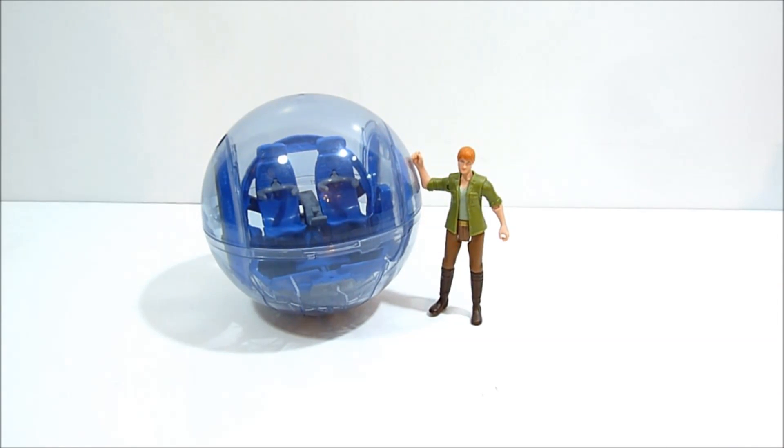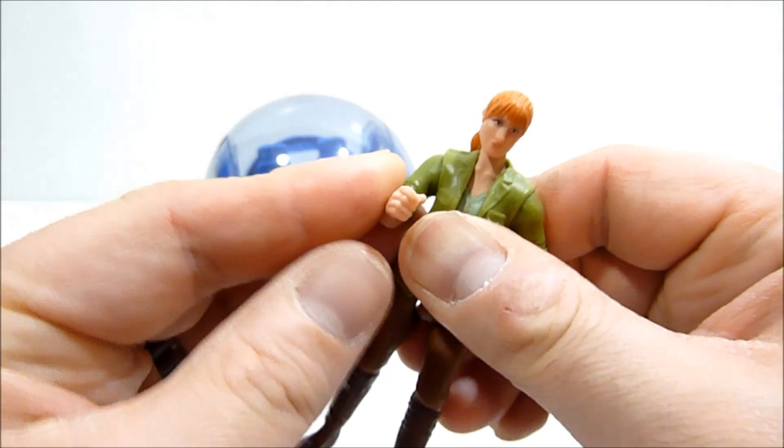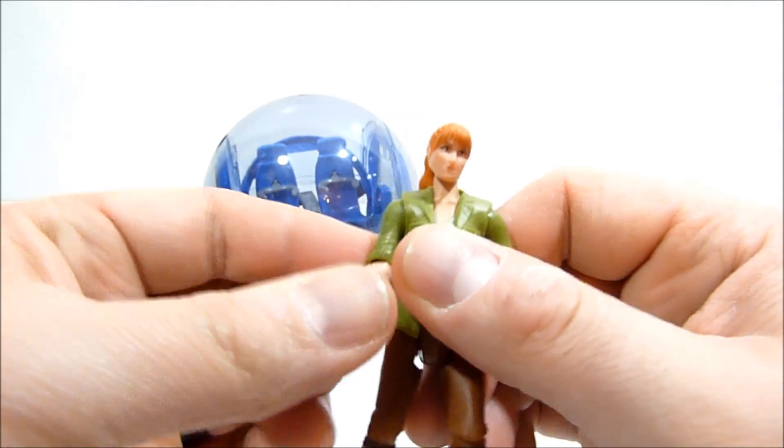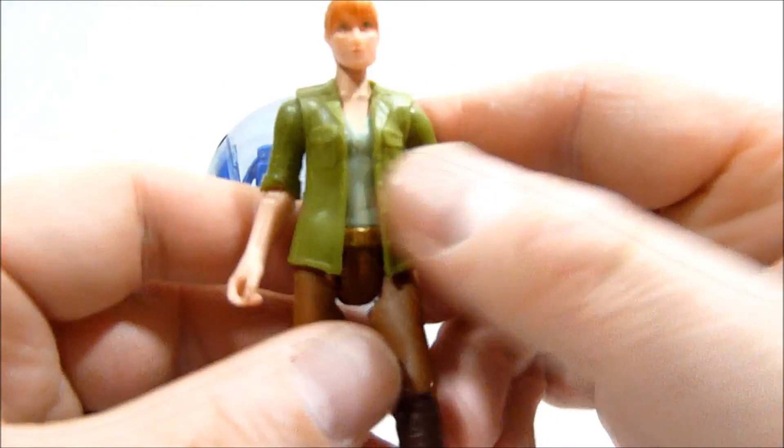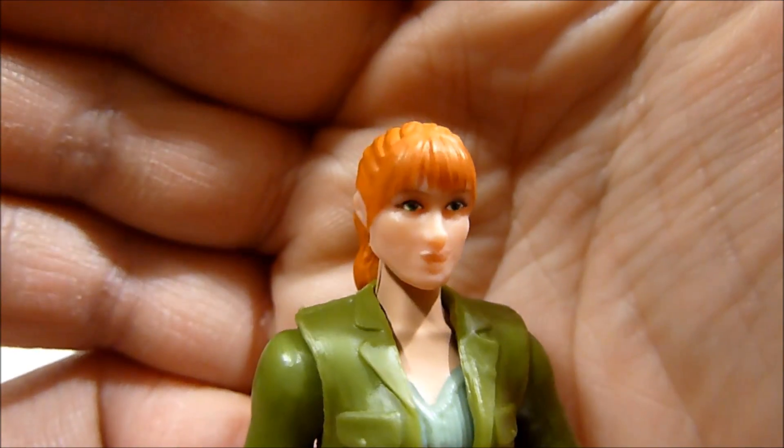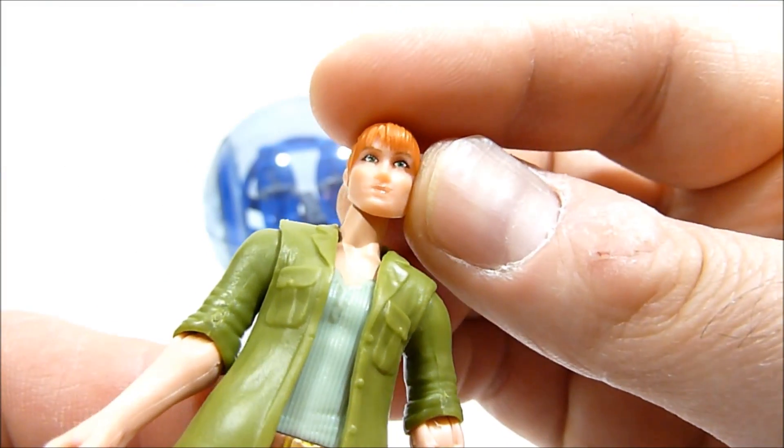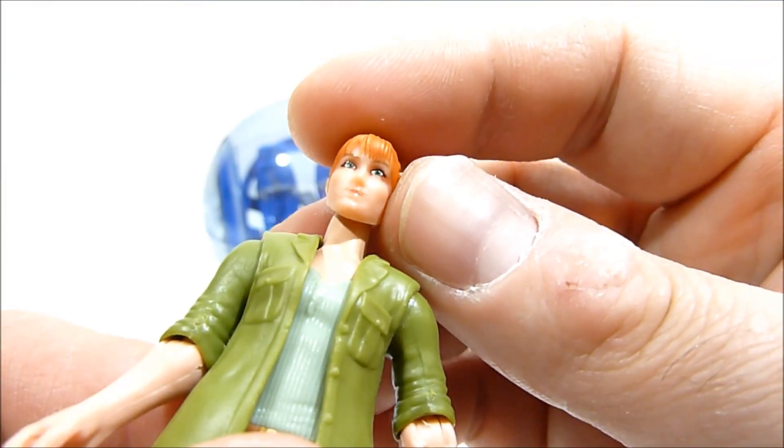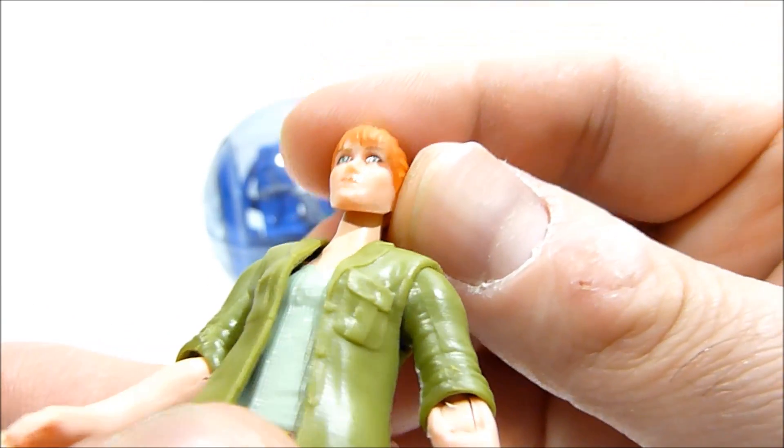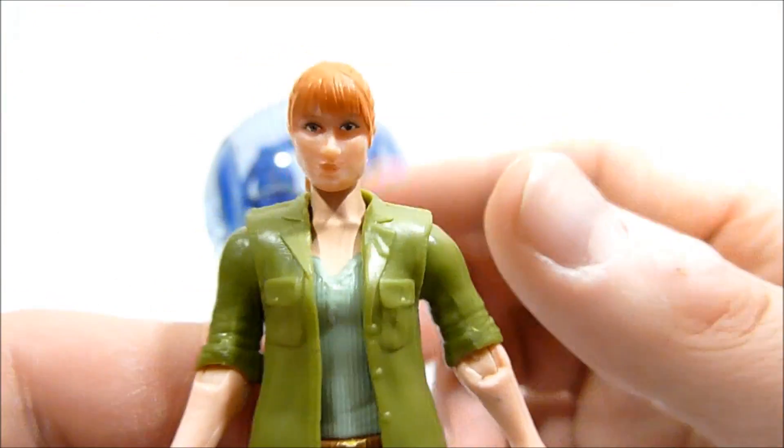Alright guys, so here we have Claire and the gyrosphere. Let's take a quick look at Claire first. Very much like all of the Jurassic World human figures, she's got some nice articulation going on, if not a very impressive head sculpt. It's actually pretty janky looking. But it's not the worst. I have a feeling the printing is a little bit off. Otherwise it might look a little better. But yeah, it's a little funky.